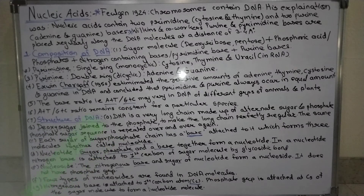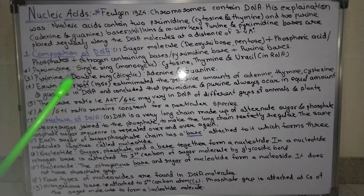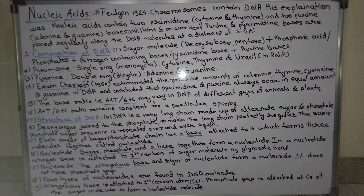To summarize nucleic acids: there are two types - DNA and RNA. The composition of DNA includes deoxyribose (pentose) sugar, phosphoric acid, and nitrogen-containing bases (pyrimidine or purine). The base ratio (adenine + thymine) to (guanine + cytosine) is different in different animals and plants, but remains constant within a species. We have also seen what nucleotides and nucleosides are. Next, we will look at the structure of DNA in more detail.